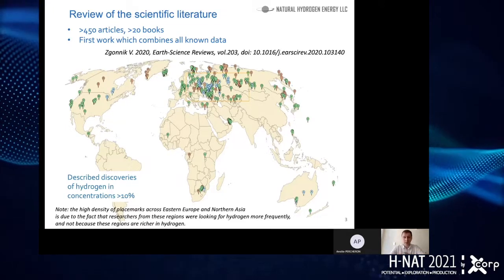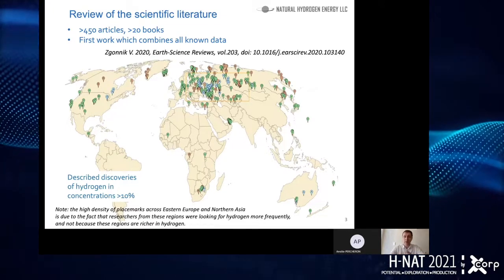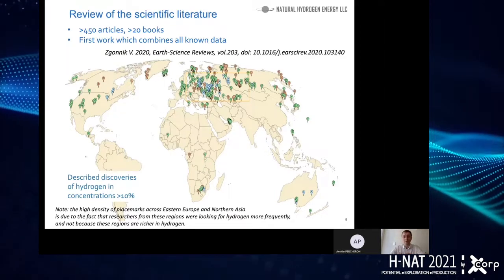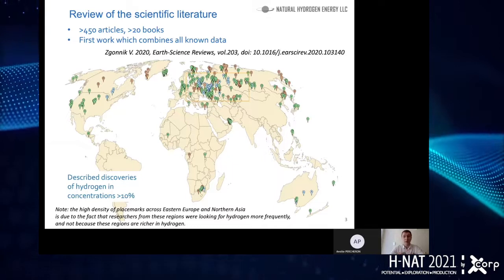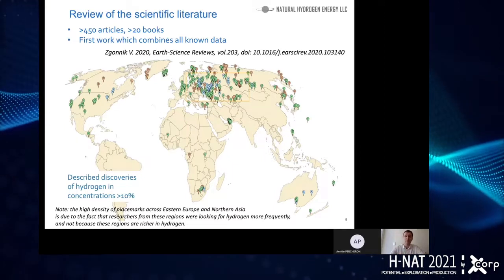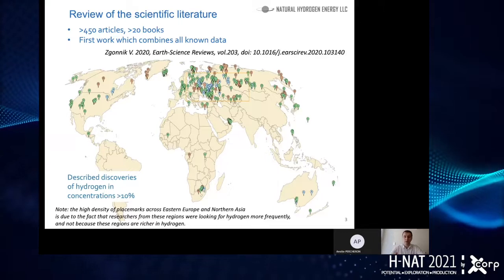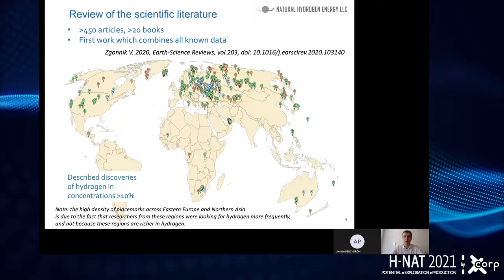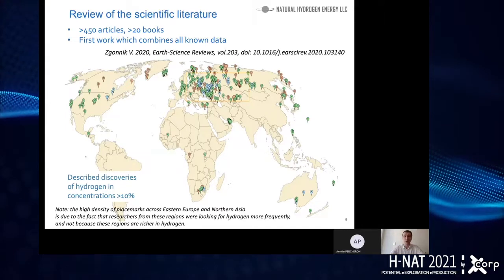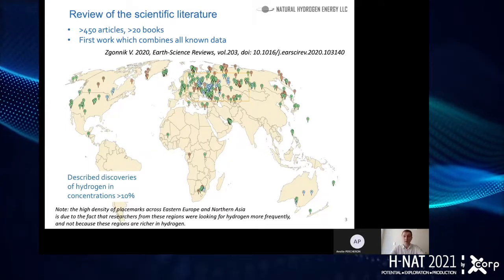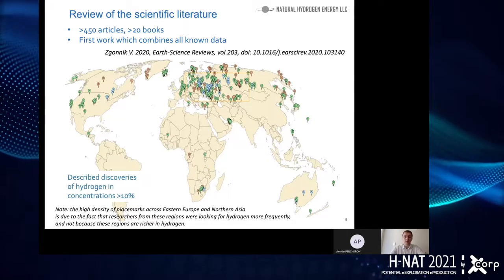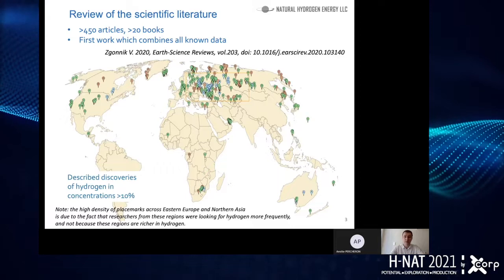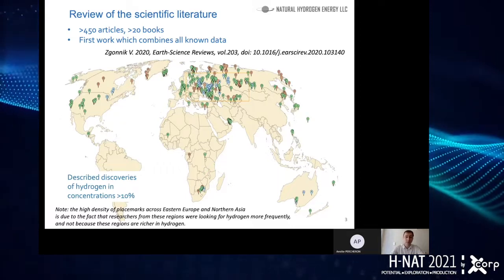This is not because all hydrogen is present there. This is because researchers from these regions were analyzing gases for hydrogen more often, and because they were doing this they were discovering it more often. You can see on this map the difference between Eastern Europe and everywhere else in the world, and specifically in North America — that natural hydrogen has been overlooked and more systematic research is necessary.